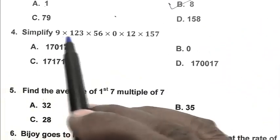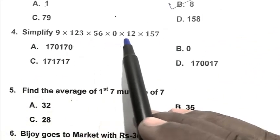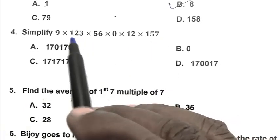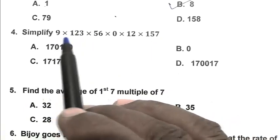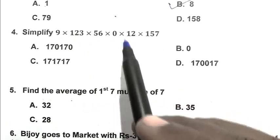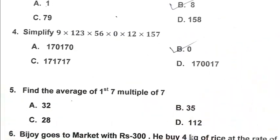Question number 4. Simplify 9 multiplied by 123 multiplied by 56 multiplied by 0 multiplied by 12 multiplied by 157. So friend, all this number is multiplied and here is 0. So if we multiplied 0 with any number, it becomes 0. So B is the right answer.